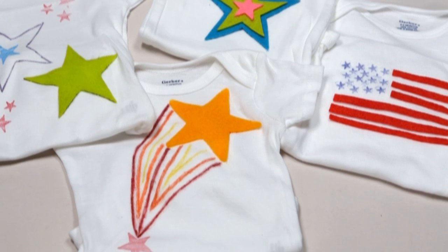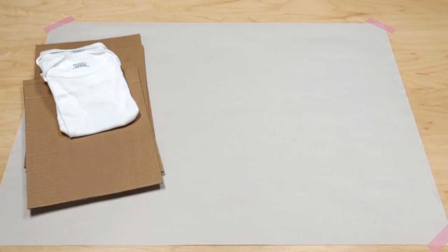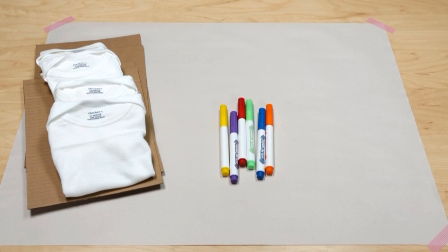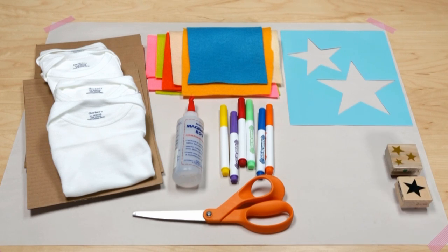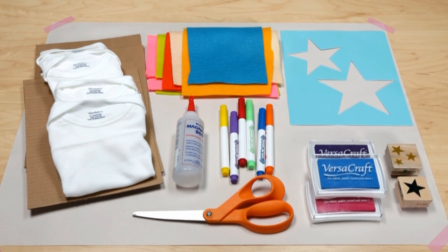To set up a baby one piece decorating station you'll need cardboard, one pieces, fabric markers, fabric glue, felt, scissors, stencils, rubber stamps, and ink pads made for fabric.